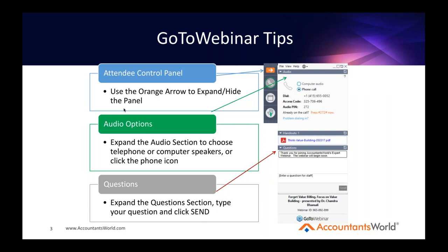A couple of tips on GoToWebinar: if you're looking for the control panel and you don't see it, look for the orange arrow — that allows you to expand or hide the panel at any time. You can select your audio options by going to the audio tab. If you have any questions for Brian, send them in at any time using the questions tab. Make sure to click the send button, and Brian will answer them during poll breaks or at the end of the presentation.